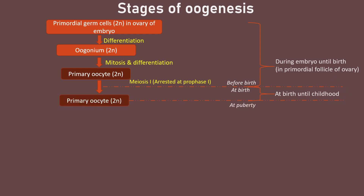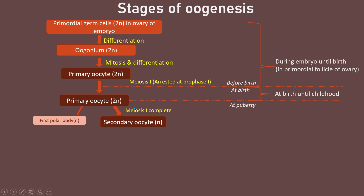Once the girl reaches puberty, the primary oocyte will continue and complete meiosis I, producing a haploid first polar body and a haploid secondary oocyte.